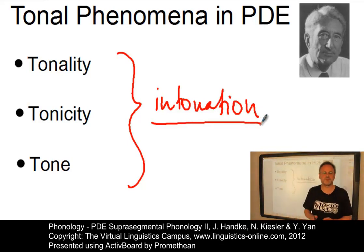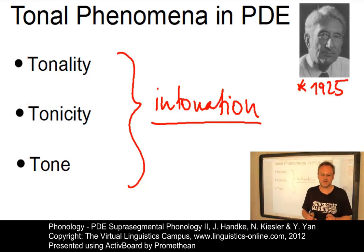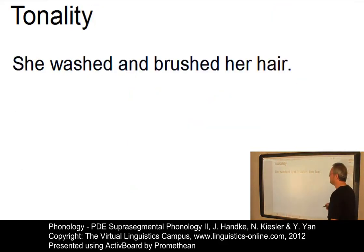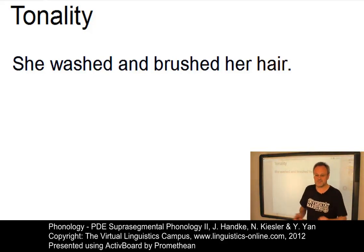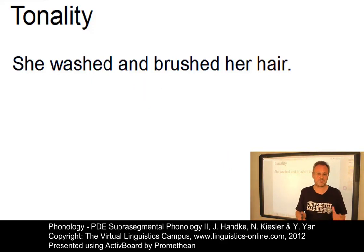These principles were first defined by British linguist Michael Halliday, born in 1925. Any utterance can be subdivided into tone groups. The boundaries between them are referred to as intonation boundaries or terminal junctures. The number and location of such terminal junctures define the tonality of an utterance. Mostly, the number of terminal junctures depends on the taste of the speaker. However, there are cases where the presence or absence of terminal junctures may influence the meaning of an utterance.